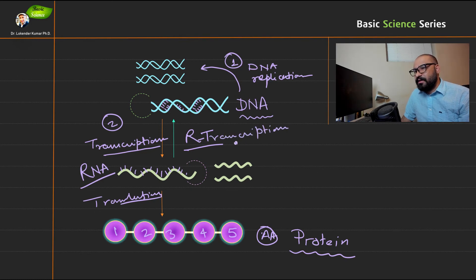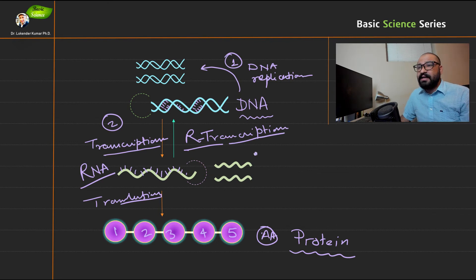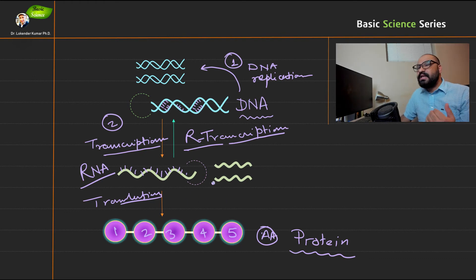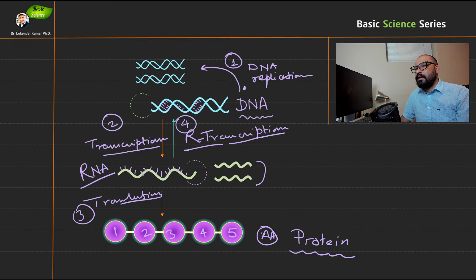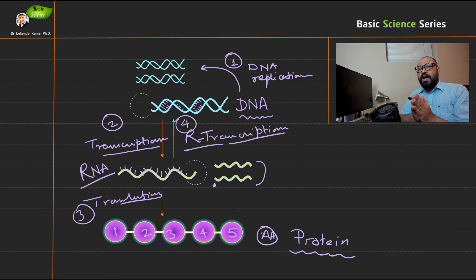These are important when we discuss techniques such as RT-PCR, and when we want to understand how proteins are synthesized, we do western blotting. It's important to understand these processes in detail. These are the important parts of the central dogma, and I hope the concept is now clear.